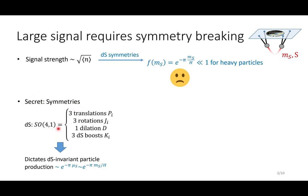So we realize that the secret is about the symmetries. Inflation is quasi-de Sitter space, which has all of its 10 symmetry generators, including three translations, three rotations, one dilation, and three de Sitter boosts. These 10 de Sitter isometries dictate the de Sitter invariant particle production to be an exponentially suppressed Boltzmann form.